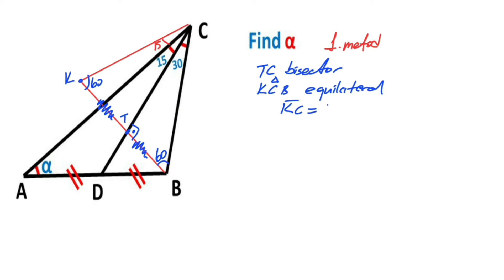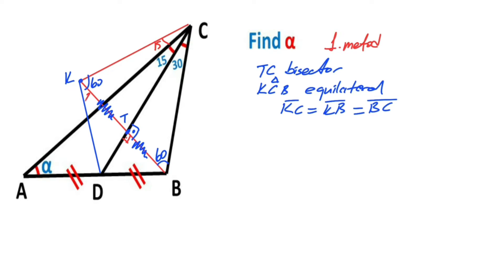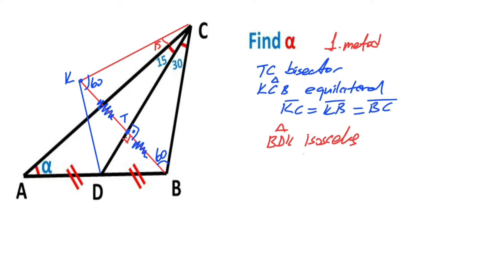That means KC, KB, and BC are equal sides. And then if we connect K and D, notice that here is 90 degrees and these two parts are equal — that means this triangle is an isosceles triangle. So triangle BDK is an isosceles triangle, which means KD must be equal to TB.